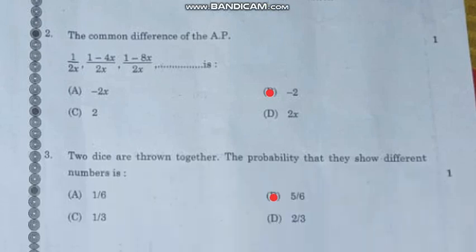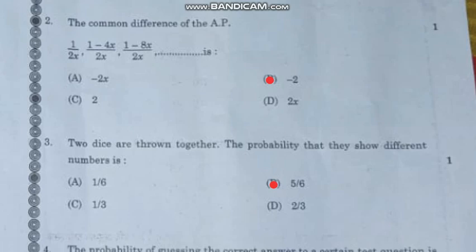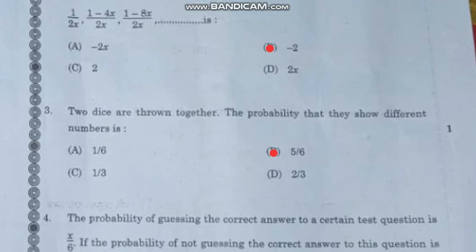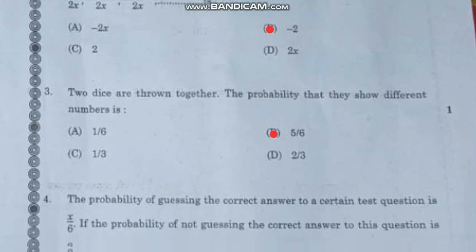Question number 2: The common difference of the AP 1/2x, (1-4x)/2x, (1-8x)/2x, and so on is—the correct answer is option B, -2.